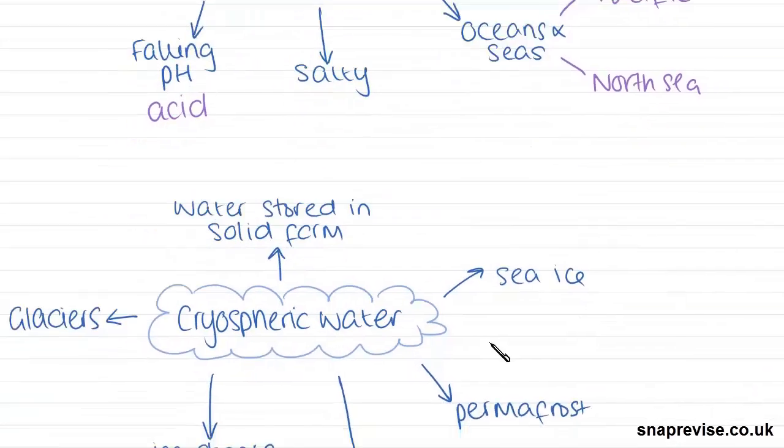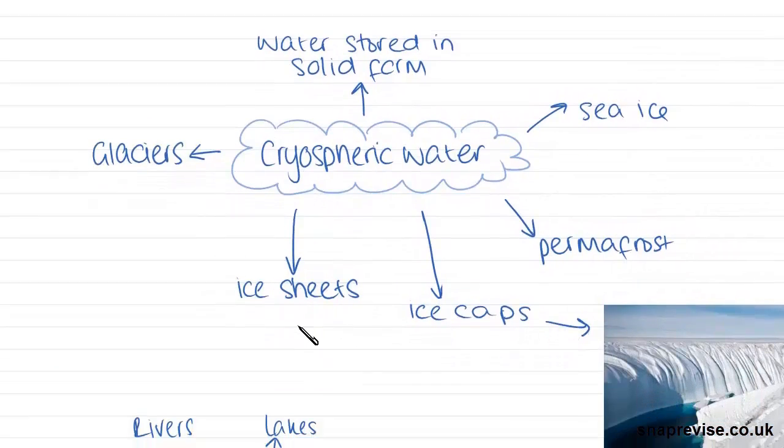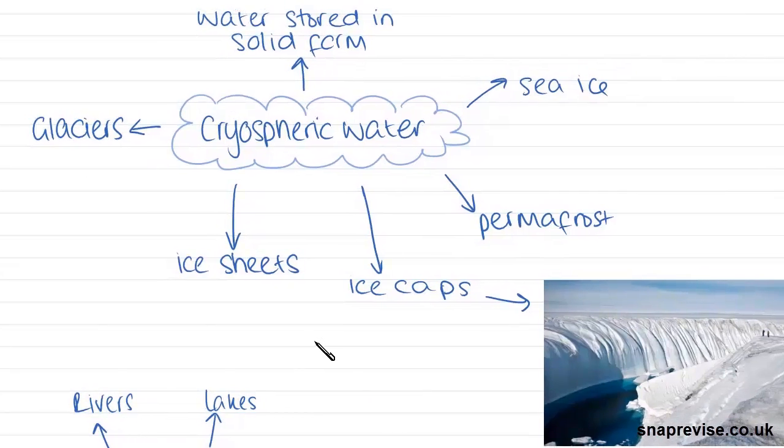The next store of water we have is cryospheric water. And cryospheric water is water that is stored on Earth in solid form. So you most likely know the solid version of water is ice. So the stores of cryospheric water we have on Earth include things like sea ice, permafrost, which is an area of land where water is frozen into the soil. We don't need to know much about this.